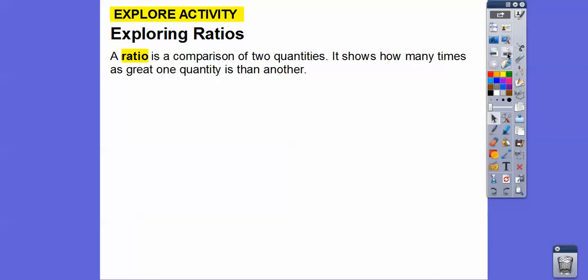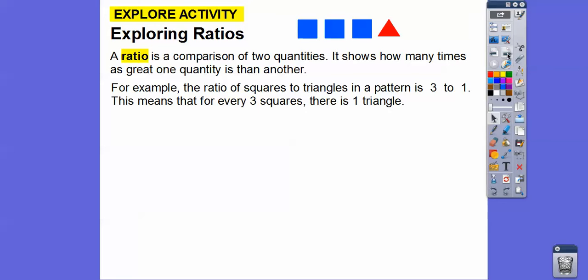A ratio is a comparison of two quantities. It shows how many times as great one quantity is than another. We use ratios all the time in our lives. For example, the ratio of squares to triangles here is three to one — so for every three squares, there's one triangle.